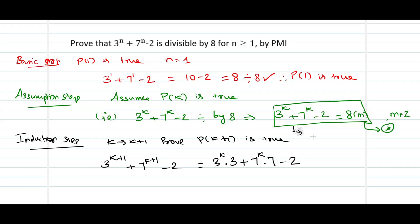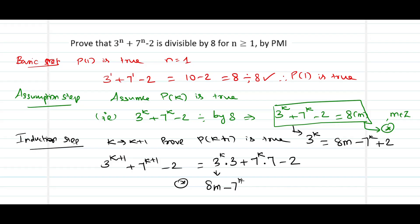From the assumption step, 3 power k can be rewritten as 8m minus 7 power k plus 2. So I replace this 3 power k with 8m minus 7 power k plus 2. As mentioned in the earlier video, do not forget there is a product of 3 here, so multiply this factor by 3. The remaining steps are 7 power k times 7 minus 2.